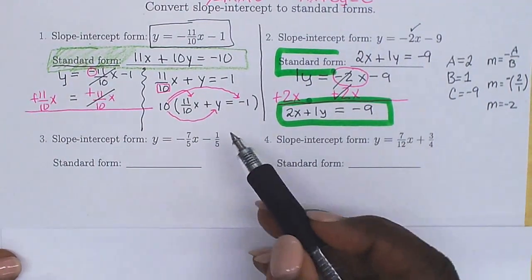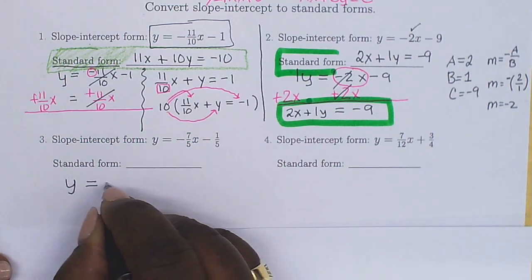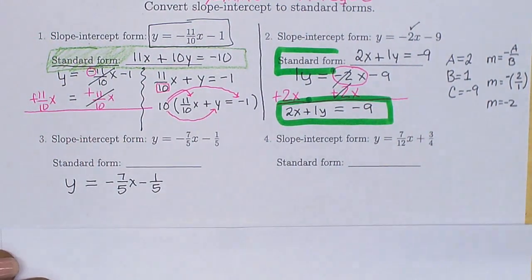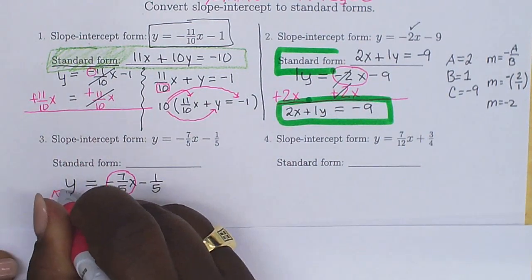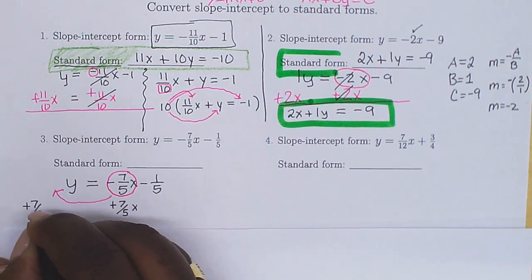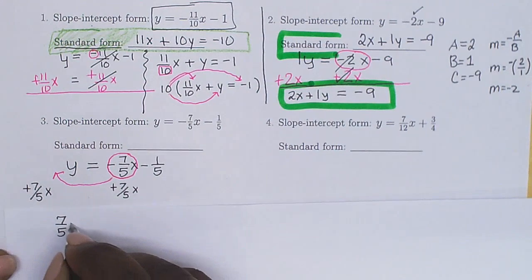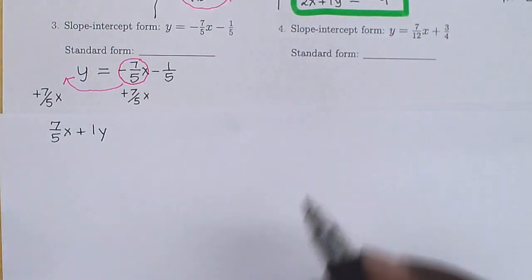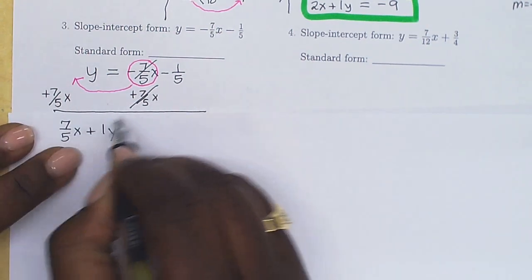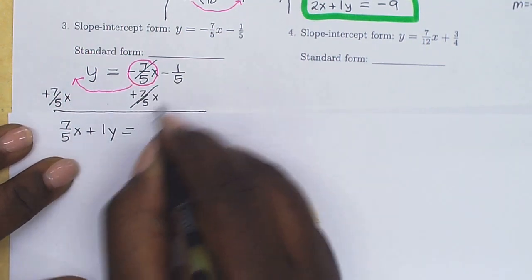Now, we got another problem. This has a lot of fractions. Just rewrite the problem. y equals negative 7 fifths x minus 1 fifth. We're going to do like we did last time. We're going to move this quantity over here by doing the opposite. So, it's going to be a plus 7 fifths x. Our new equation is going to be 7 over 5 x plus 1 y. These two cancel on this side, and I have plus 7 fifths x plus y equals negative 1 fifth.